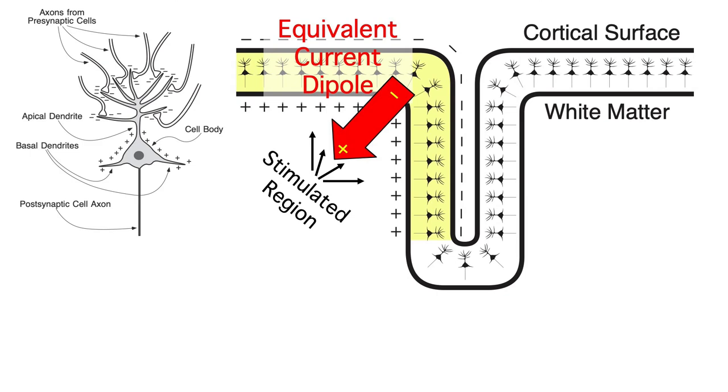But notice that the equivalent current dipole isn't a great representation of the individual neural dipoles. It has a 45 degree orientation in this example, whereas the individual neurons are all either vertical or horizontal. And the equivalent current dipole is centered in the white matter rather than in the gray matter. That's what happens when we try to simplify a complex pattern of neural activity with a single dipole.